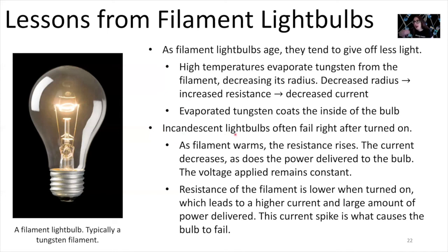Light bulbs like this often fail right after you flick them on. Usually that's when the majority of the light bulbs that I've had in lamps around my house go off. When they fail is whenever I flip the switch. Why does that happen? Well, as the filament warms, we learned that the resistance rises as the temperature goes up. Higher resistance, same potential, our current decreases. So that means that the power delivered to the light bulb also decreases. But the voltage applied remains the same. The resistance of the filament is lower whenever it's turned on because it's cooler, which leads to a higher current and a large amount of power that gets delivered at that moment. And this current spike, this initial current spike, is what causes the light bulb to fail initially whenever you flick it on.